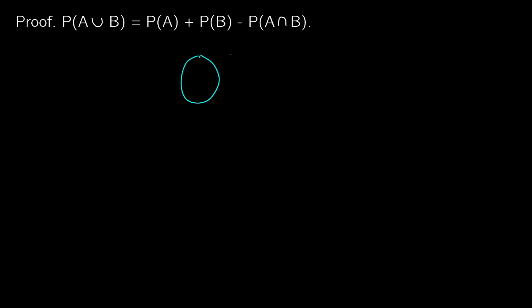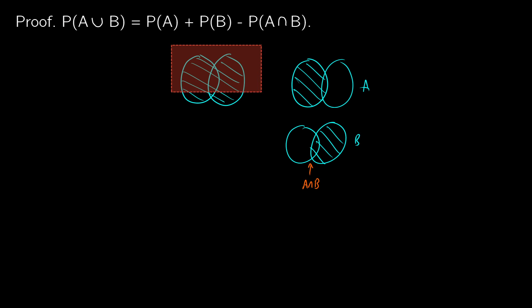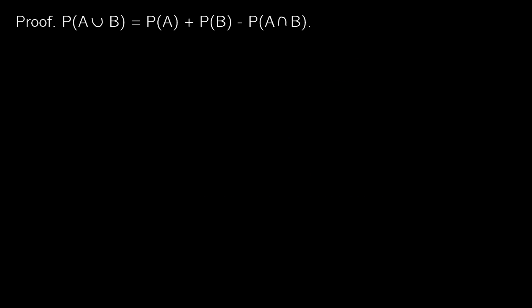The intuition is: if we want the probability of the entire union, adding P(A) and P(B) counts the middle intersection region — A intersection B — twice. So because it's being added twice, we need to subtract it once: P(A) + P(B) − P(A ∩ B) gives us the probability of A union B. We should prove this.